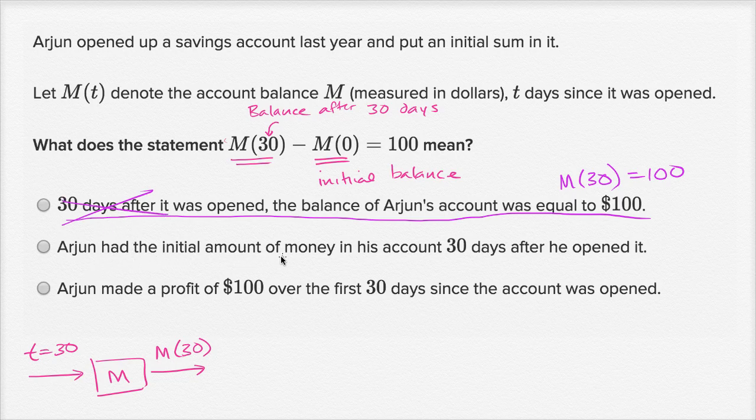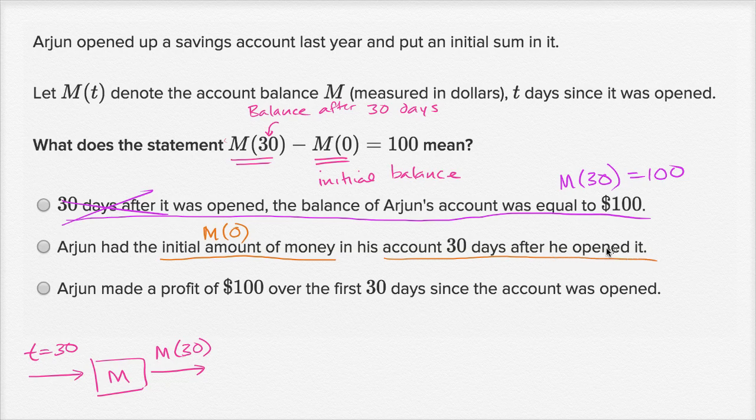Arjun had the initial amount of money in his account 30 days after he opened it. So if he had the initial amount, the initial amount of money is M(0). So they're saying he had the initial amount of money in his account 30 days after he opened it. Well the amount that he has in his account 30 days after he opened it is M(30).